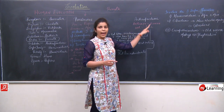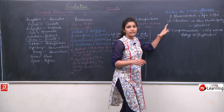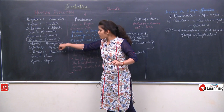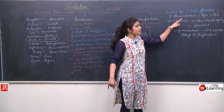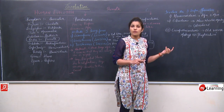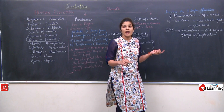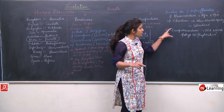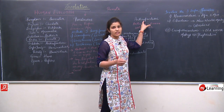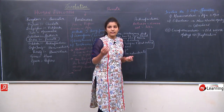In suborder Anthropoidy, it involves three superfamilies: Hominoidea involving apes and men, Ceboidea involving New World Monkeys, and Cercopithecoidea involving Old World Monkeys.